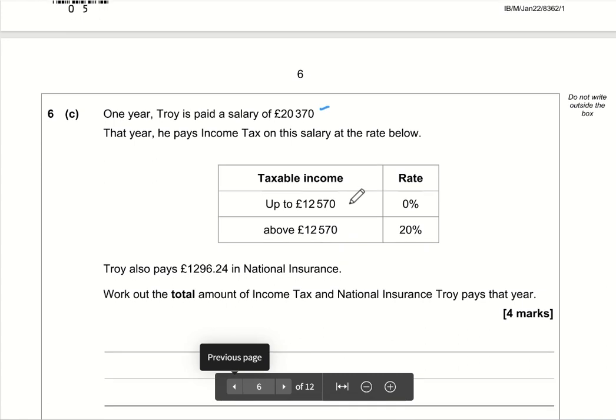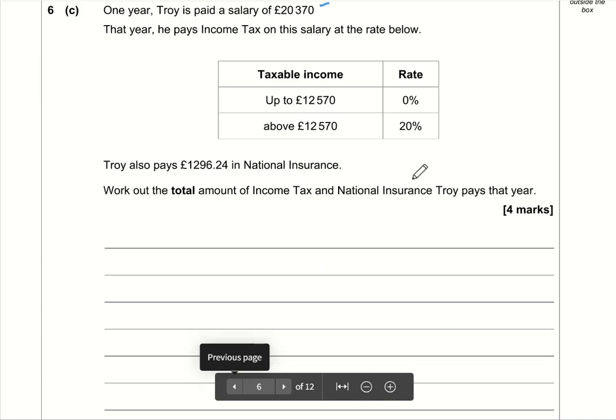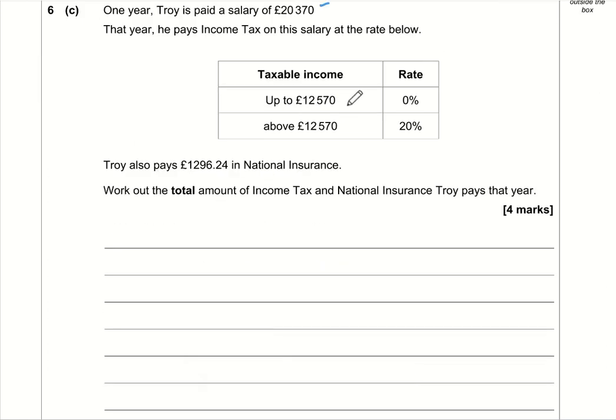The final part of Question 6 is about Troy's salary. One year Troy is paid a salary of £20,370. We know he pays income tax. The first £12,570 he earns is tax-free; he only pays tax on every pound above £12,570.